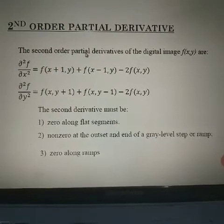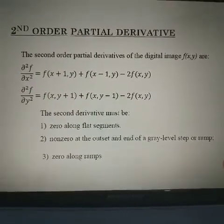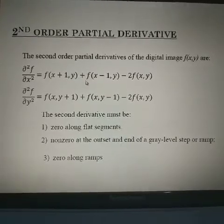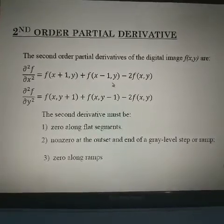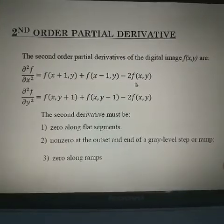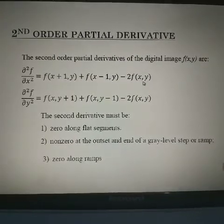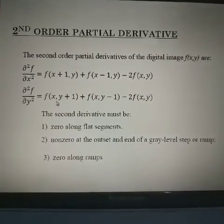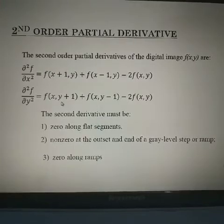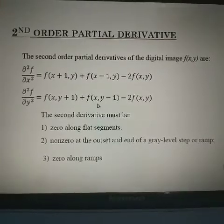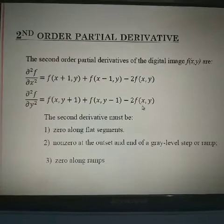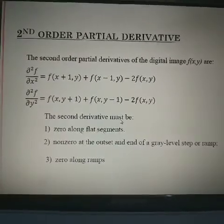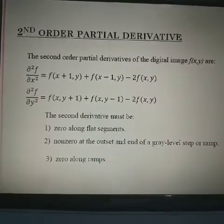For the second-order partial derivative, after applying the first and second differentiation, the value becomes: f(x+1, y) + f(x−1, y) − 2f(x, y) for the x coordinate. For the y coordinate, the second partial derivative is: f(x, y+1) + f(x, y−1) − 2f(x, y).